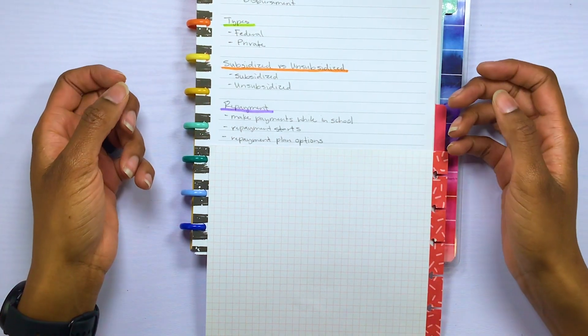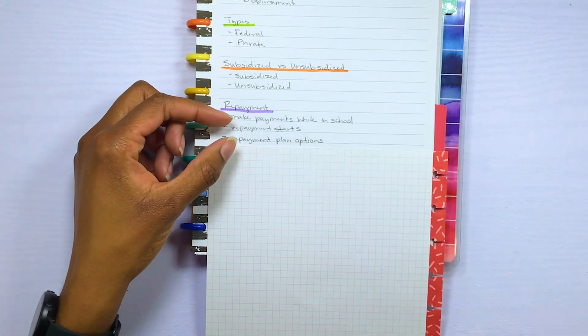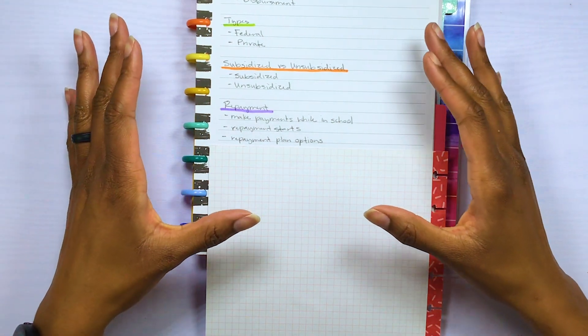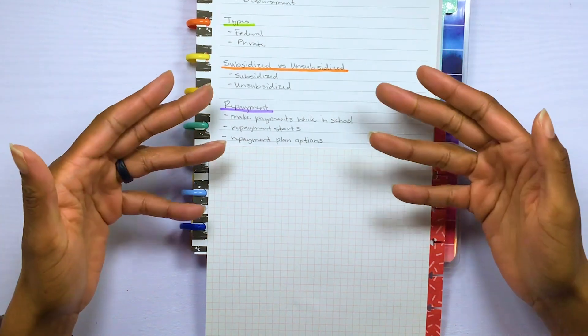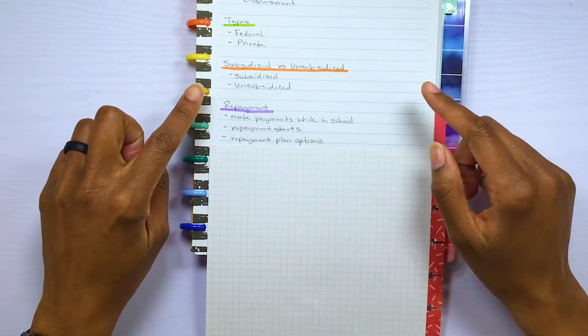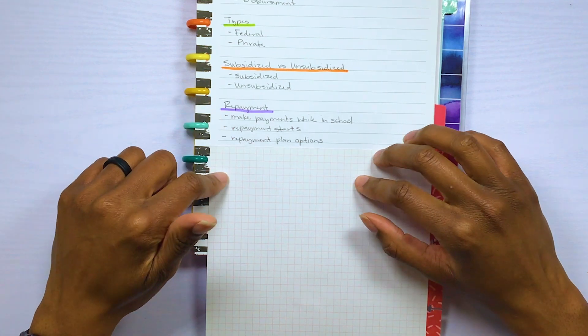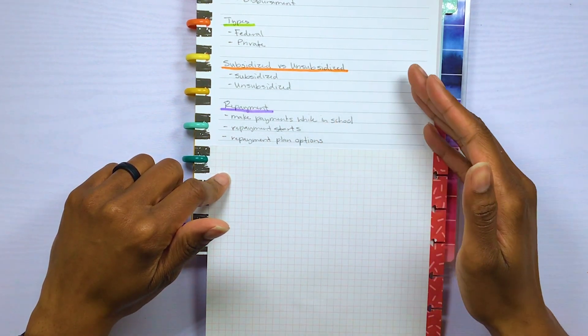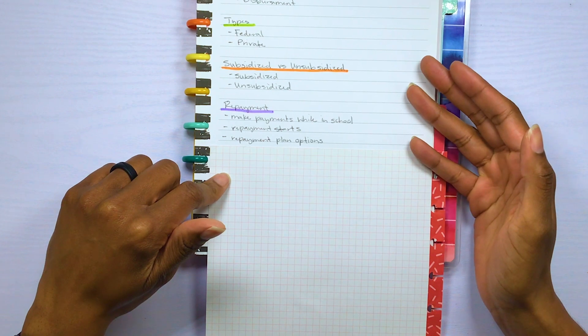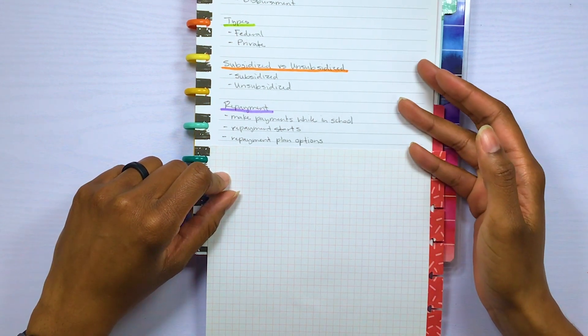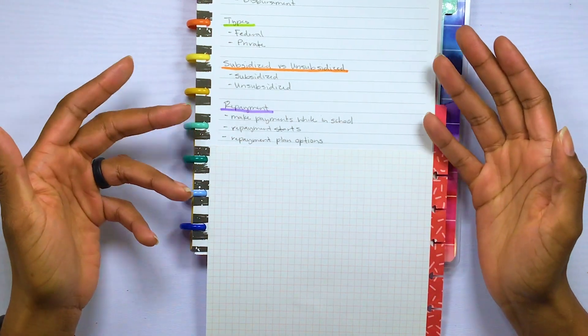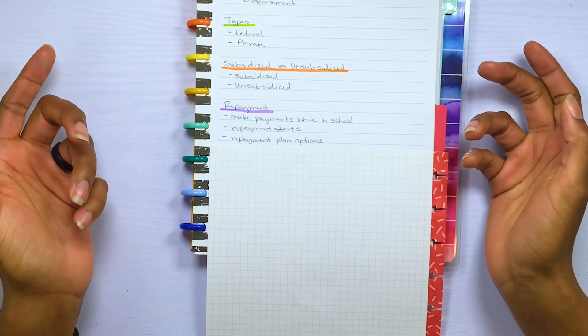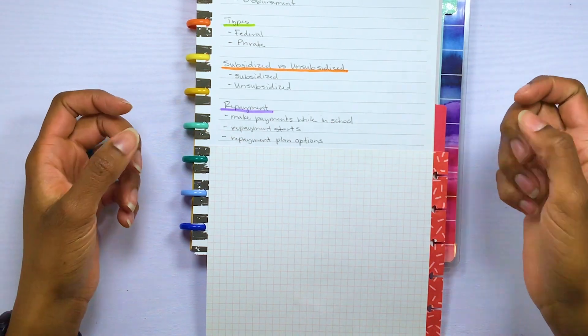And then there's loan consolidation. Loan consolidation basically combines multiple loans into one loan so that you are now making one monthly payment instead of multiple payments on multiple loans. Just know that with this one, the interest rate on the consolidated loan is typically based on the average of the interest rates of your other loans. So there is pros and cons to this. But if you have federal loans, you should be able to reach out to your loan servicer and get this service free. So you should not be paying for any service that consolidates your federal student loans because it's free with your loan servicer typically.